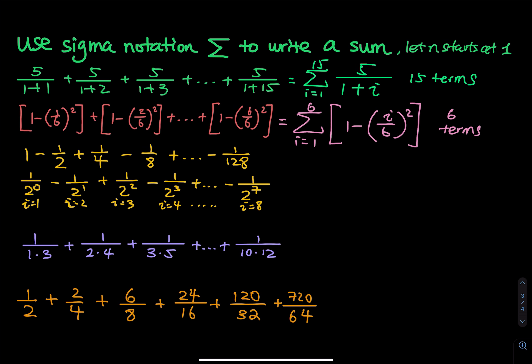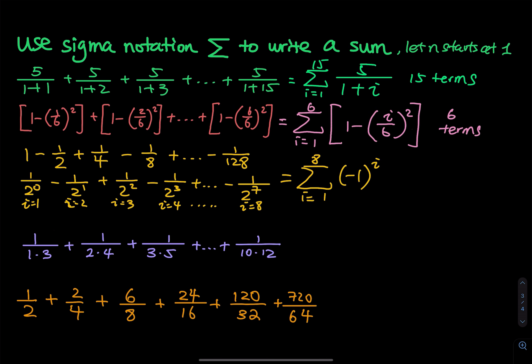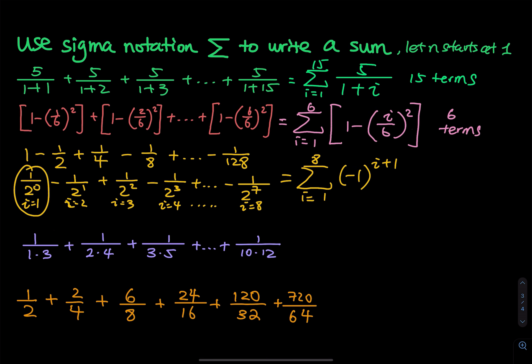There are 8 terms if you force starting at 1. The summation goes from i equals 1 to 8. When i equals 1, you'd get a negative, but the first term is positive, so plain i doesn't work. We adjust: when i equals 1, we use i plus 1 equals 2, so negative 1 to the second power is positive. When i equals 2, 2 plus 1 is 3, which is an odd power, giving a negative. That works. For the denominator, use i minus 1 as the exponent: when i equals 1, you get zero power; i equals 2, first power; i equals 3, second power.